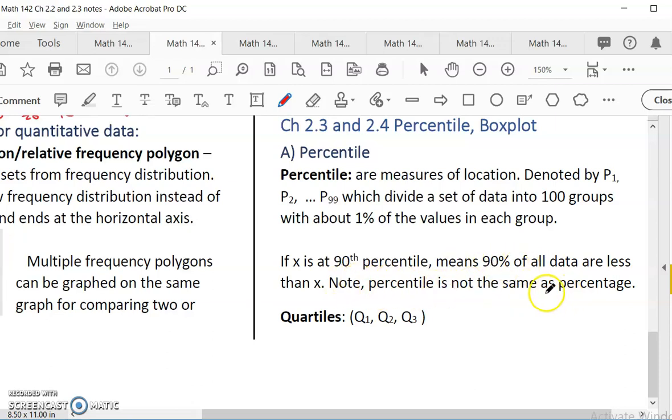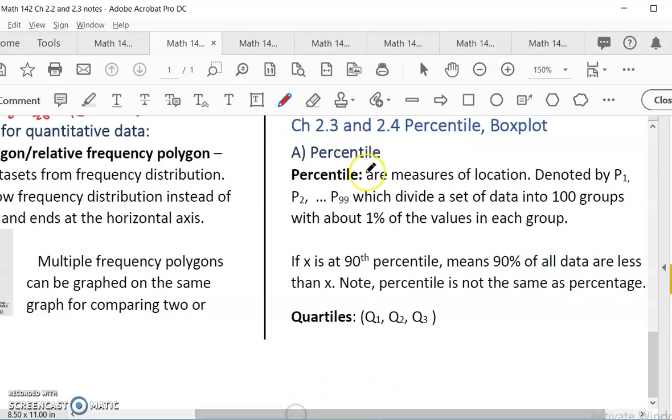And it is at 90th percentile. That means 90% of the data are less than you. You are greater than 90% of data. Your value is more than 90% of data. If you are at the 10th percentile, you are only more than 10% of the data value. But notice percentile is not the same as percentage. Percentage is what score you have relative to the total score. The percentile is comparing you with the rest of the data.